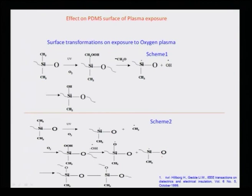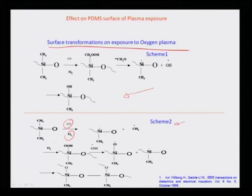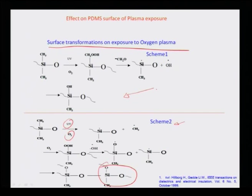Several surface transformations on PDMS have been reported by various groups. One is the formulation of OH groups, and another scheme involves UV and O2 exposure leading again to formulation of SiO. There are different reactions reported by various people working with this polymeric material PDMS as a basis of bonding schemes between surfaces.